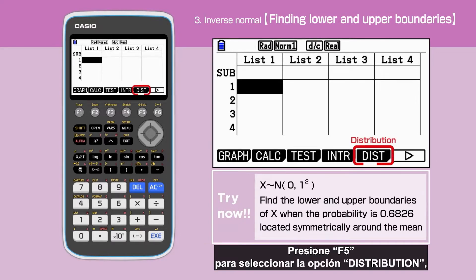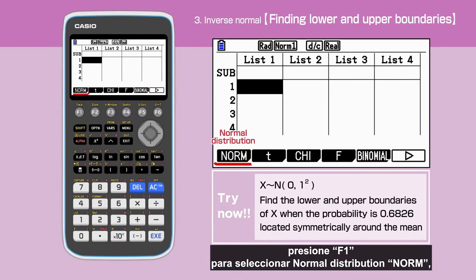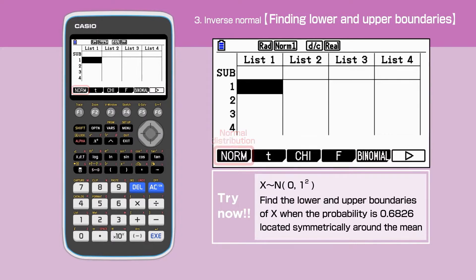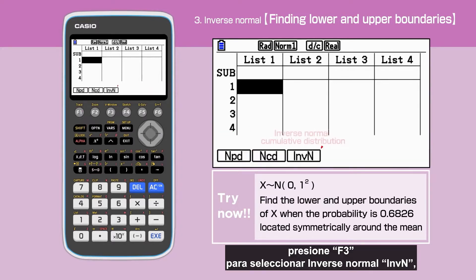Press F5 to select Distribution. Press F1 to select the Normal Distribution. Press F3 to select Inverse Normal.